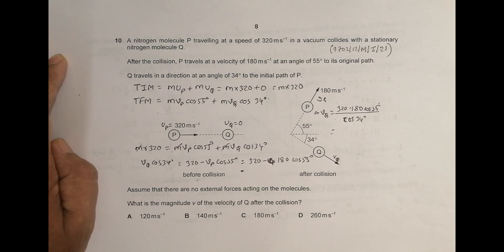So it will give us 320 minus 180 cos 55 divided by cos 34. So I have to use proper brackets here. So I am using proper brackets, the use of bracket is very essential here.